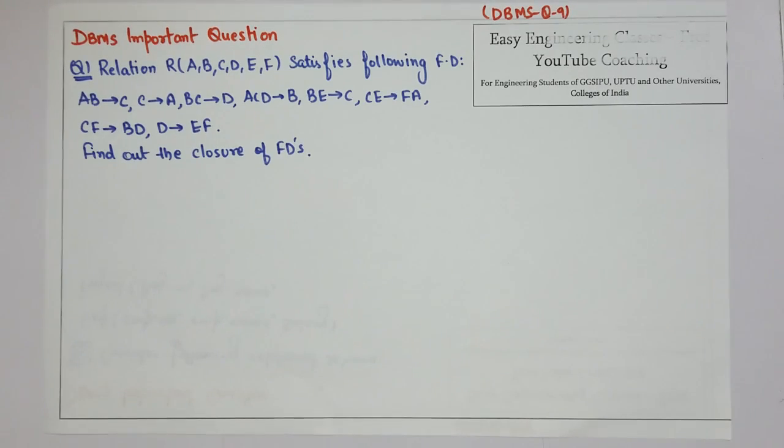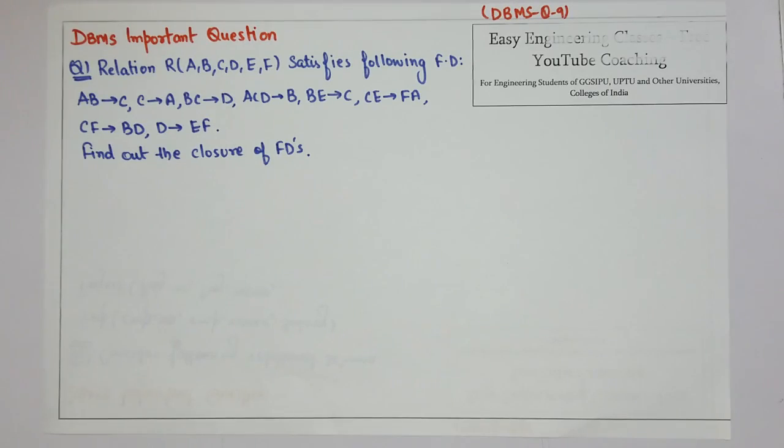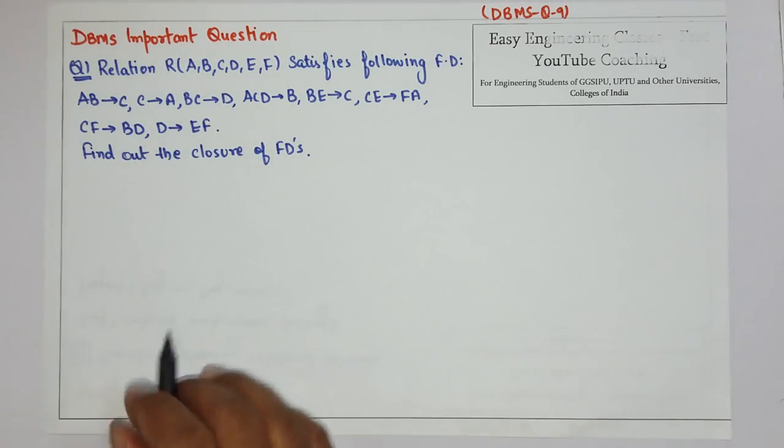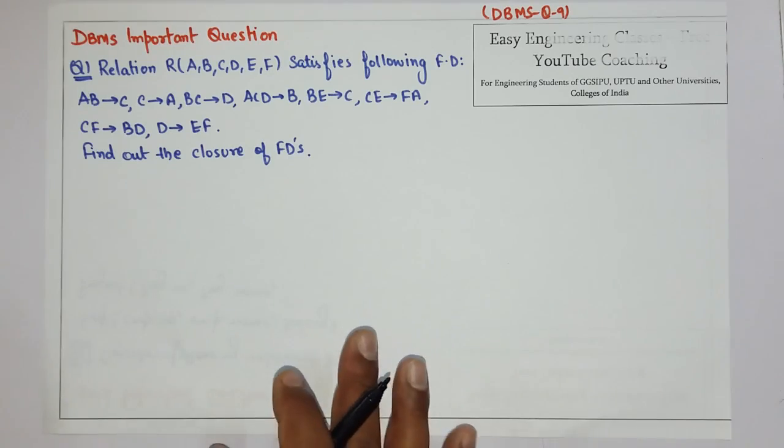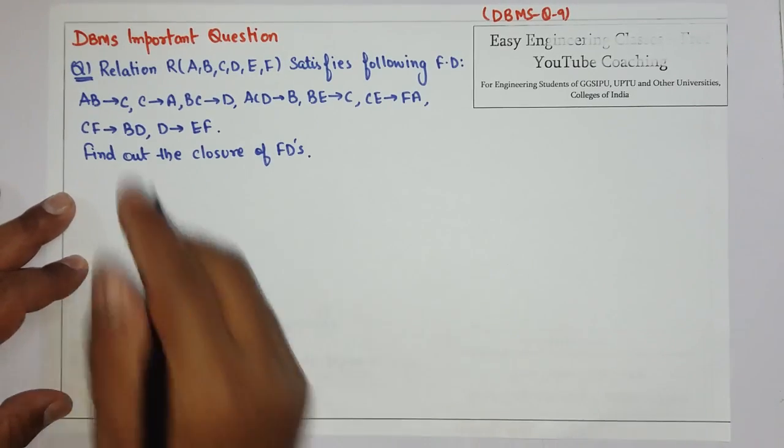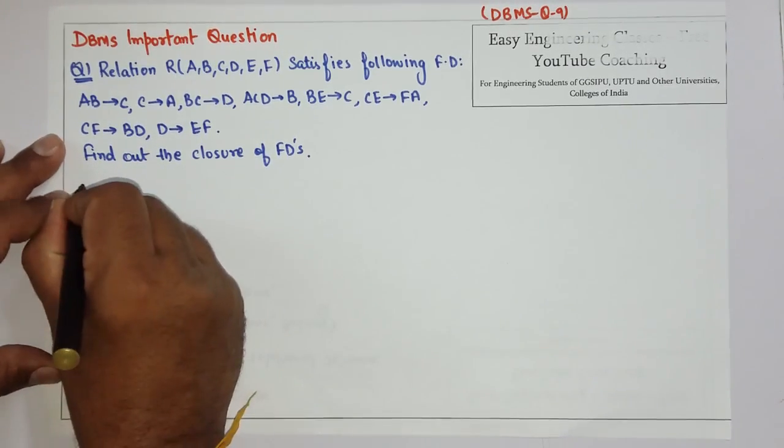The question says there are six different attributes in a relation R and the FDs are given. And we have to find out the closure of FDs. So let's start by finding the closure of FDs.